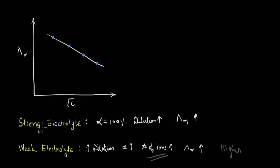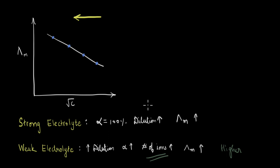Let's verify this trend with what we know. In the case of a strong electrolyte, when we increase dilution the molar conductivity increases, and increasing dilution is the same as decreasing concentration. Looking at the plot, as we go from right to left, the concentration is decreasing and the dilution is increasing, and accordingly the molar conductivity values along the y-axis increase. So from the plot, we confirm that when dilution increases or concentration decreases, the corresponding molar conductivity increases.